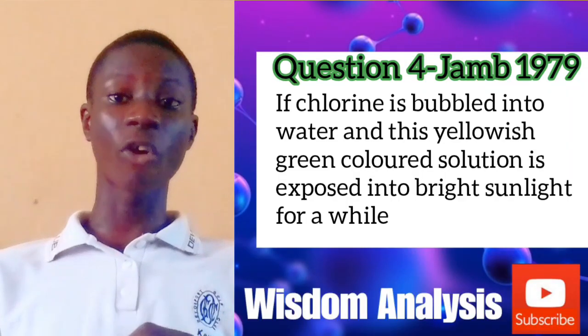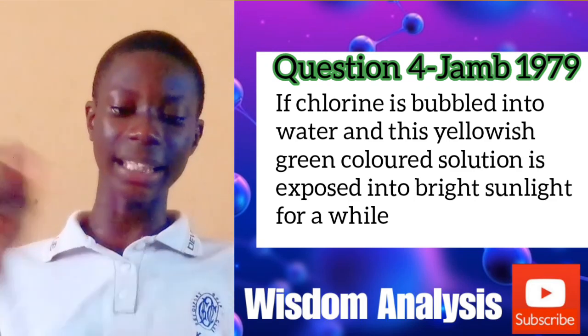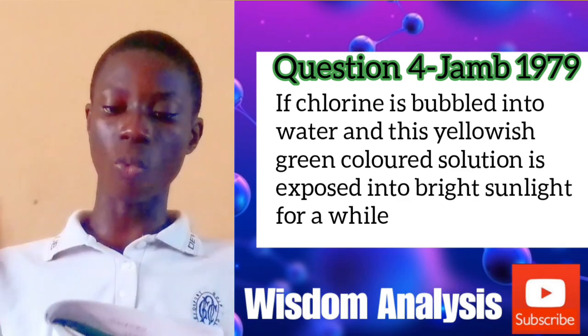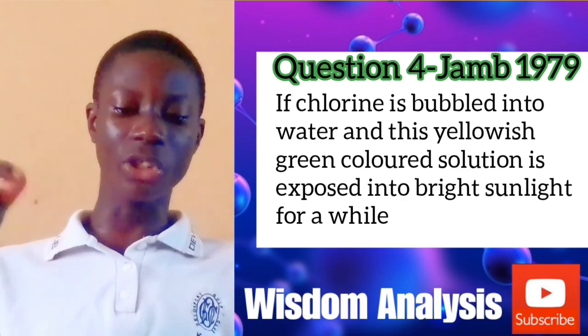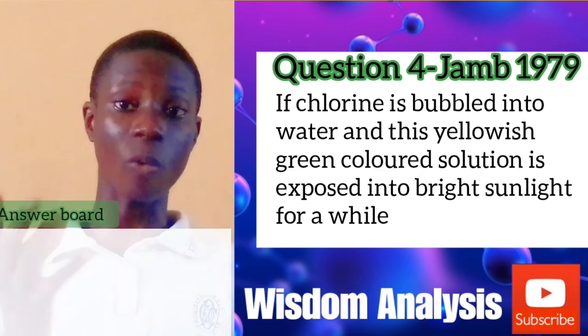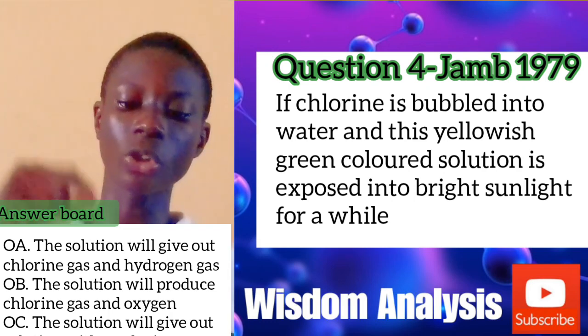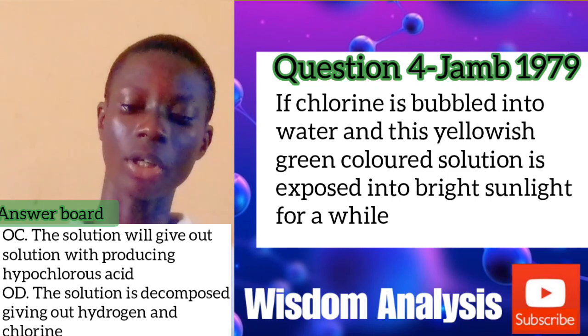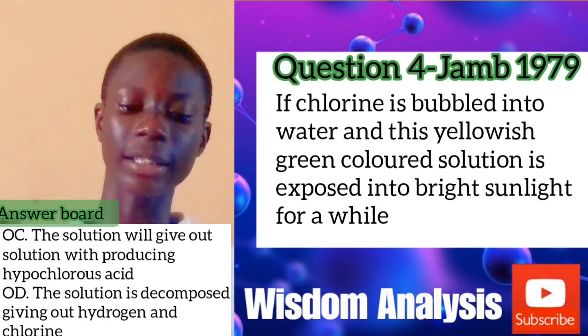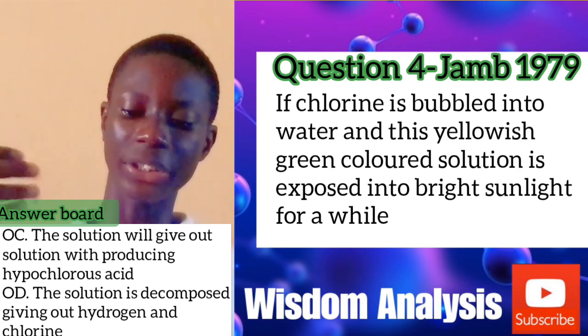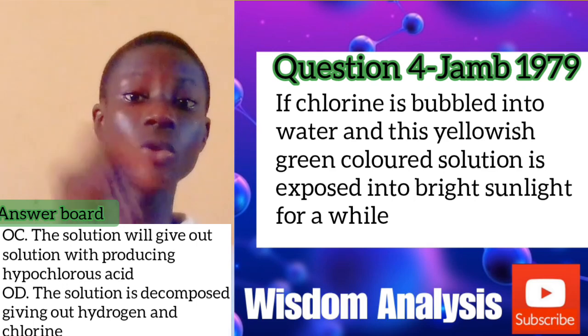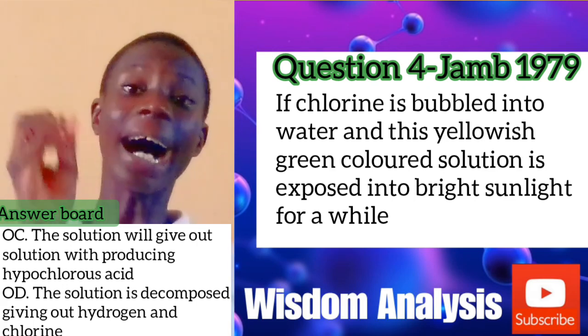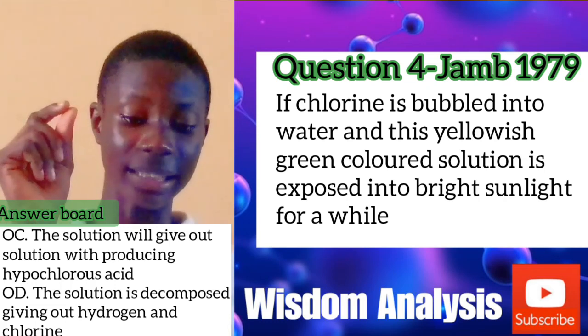Question four is from JAM 1978: If chlorine is bubbled into water and the yellowish-green colored solution is exposed to bright sunlight for a while — A: the solution will give out chlorine gas and hydrogen gas; B: the solution will produce chlorine gas and oxygen; C: the solution will produce hypochlorous acid; D: the solution is decomposed giving out hydrogen and chlorine. When chlorine dissolves in water, it forms hypochlorous acid, so the answer is C.